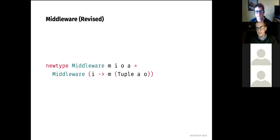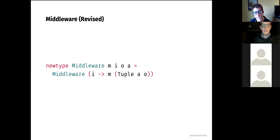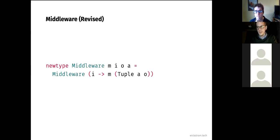The new design is basically the indexed state monad. You have four type parameters: M for the monad or applicative, I and O where I is the input and O is the output — meaning this action transforms the inner connection from type I to type O when you bind it — and A is the return type like a monad.